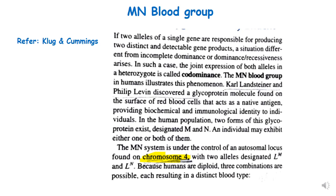The MN system of blood group is under the control of an autosomal gene found on chromosome 4, which has two alleles: LM and LN. They are called LM and LN because the system was discovered by Landsteiner. Since humans are diploid, there are three genotypic combinations possible with these two alleles, resulting in distinct blood types. MN blood group is co-dominant, with both alleles LM and LN expressing simultaneously.